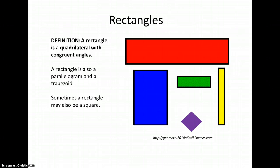Of course, we know all four are right angles and measure 90 degrees. A rectangle is also a parallelogram and a trapezoid. And sometimes it can be a square, if you pick a very special rectangle.